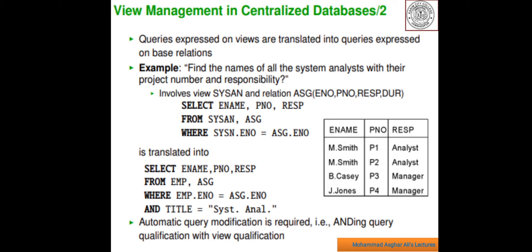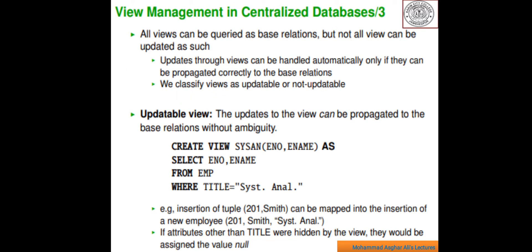Automatic query modification is required — ending query qualification with view qualifications. Now, for view management in a centralized database, the third example: all views can be queried as base relations, but not all views can be updated as such. Updates through views can be handled automatically only if they can be propagated correctly to the base relations. We classify views as updatable and non-updatable.